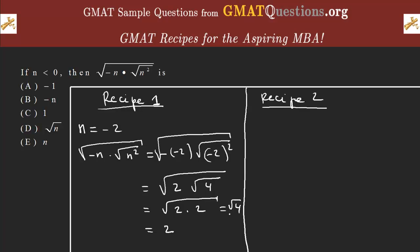Note that root of four equals two — not two or negative two, just two. By definition, you take the positive root. If you don't understand that, you can watch my video about the definition of a square root. Now all you have to do is take the n we chose — n equal to negative two — and plug it into each of the answer choices.